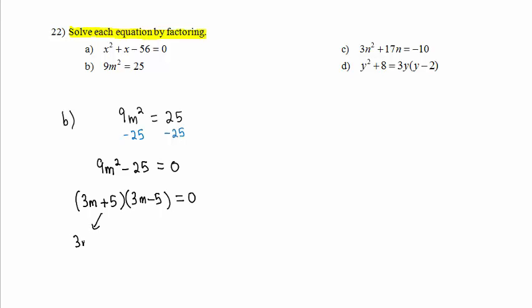Setting 3m plus 5 equal to 0, we subtract 5 from both sides and get 3m equals negative 5. Dividing both sides by 3, we get one solution as m equals negative 5 thirds.